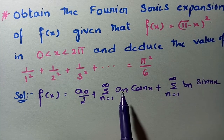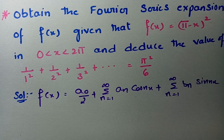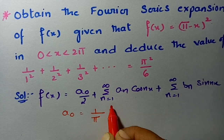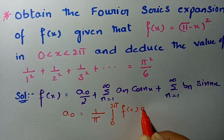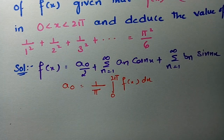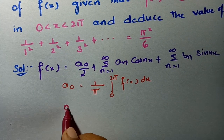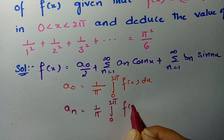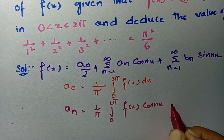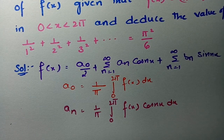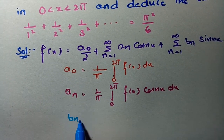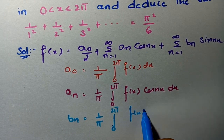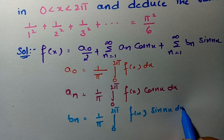We have to find the values of a0, an, and bn and substitute in this formula. For finding a0, the formula is (1/π)·∫₀²π f(x) dx. For finding an, it is (1/π)·∫₀²π f(x)·cos(nx) dx. And for finding bn, the formula is (1/π)·∫₀²π f(x)·sin(nx) dx.